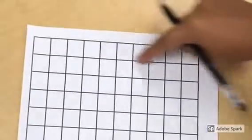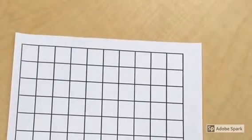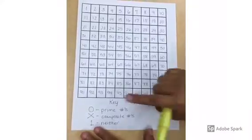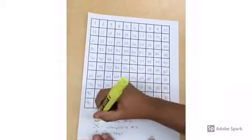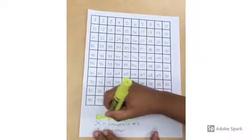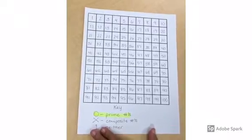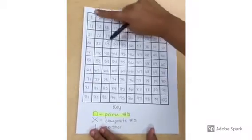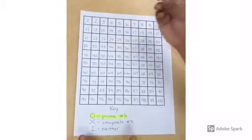Now fill out your hundreds chart from left to right, one to a hundred. After filling out your hundreds chart, go down to your key and highlight that you are circling all of the prime numbers. Remember, the number one is neither prime nor composite.